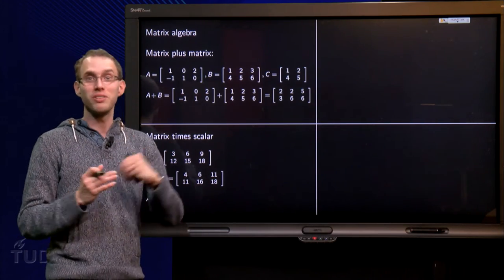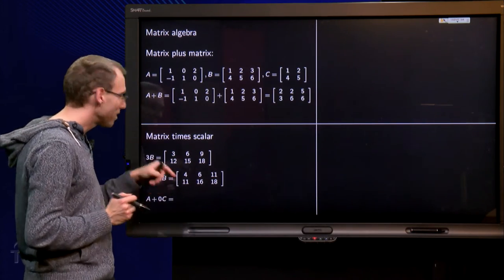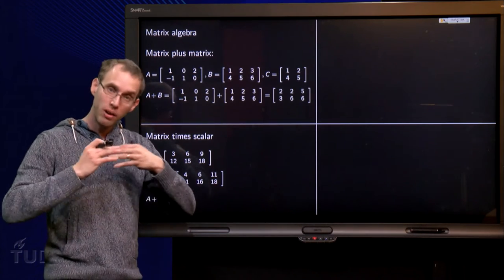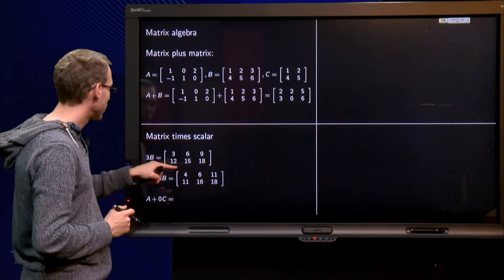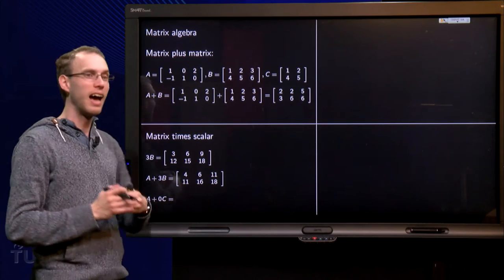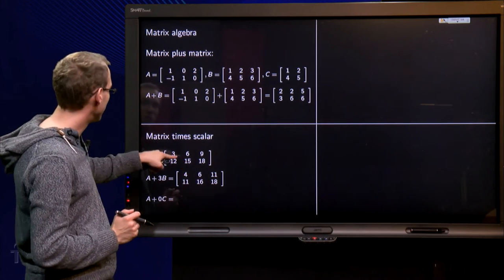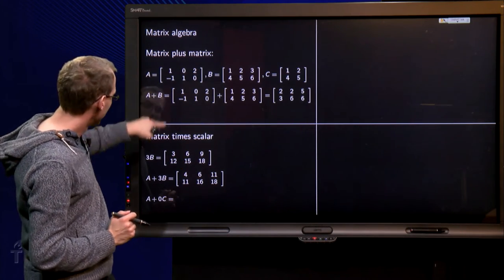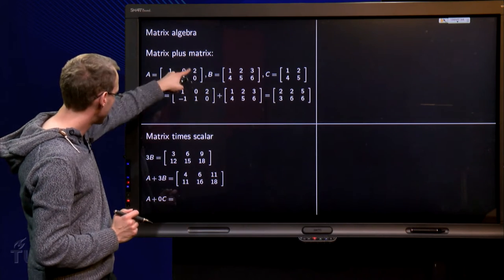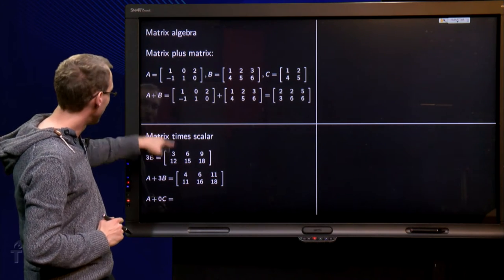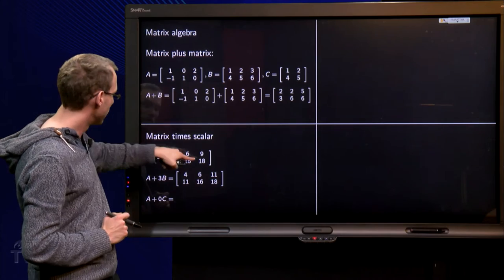So let's do an even more difficult exercise, compute A plus 3 times B. Well, in order to do that, you first have to compute 3 times B, and then add A. So 3 times B over here, and add A: 4, 6, 11, 11, 16, 18.